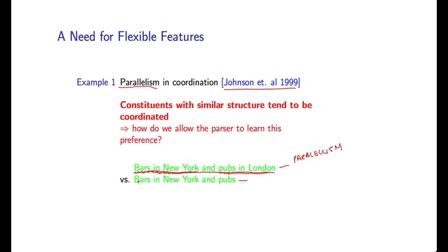If we look at the second example, this does not have parallelism. So we're coordinating bars in New York with pubs, and these two constituents do not have the same internal syntactic structure. So statistically speaking, we seem to see a preference for these kind of structures as opposed to these.